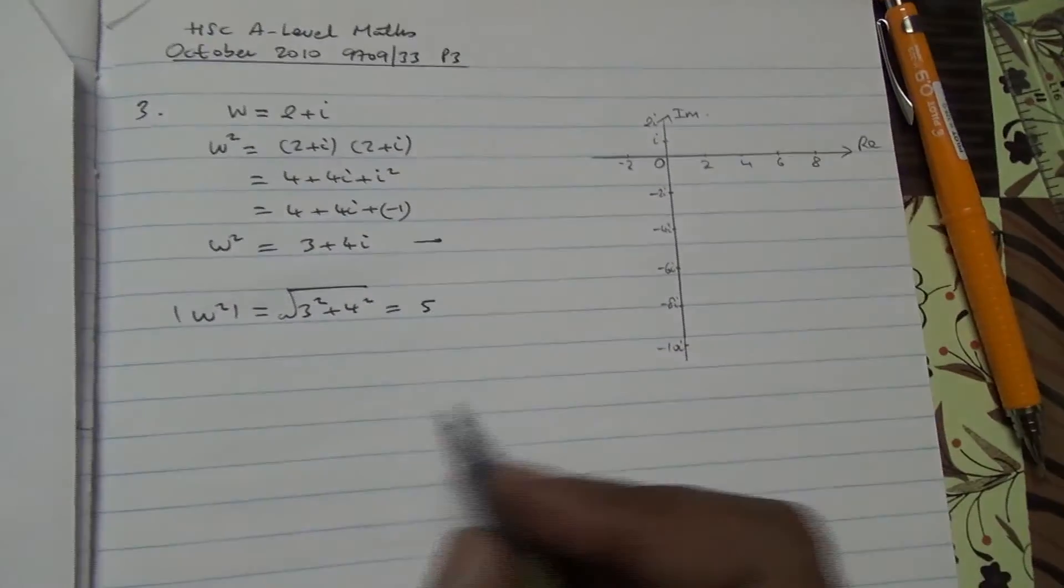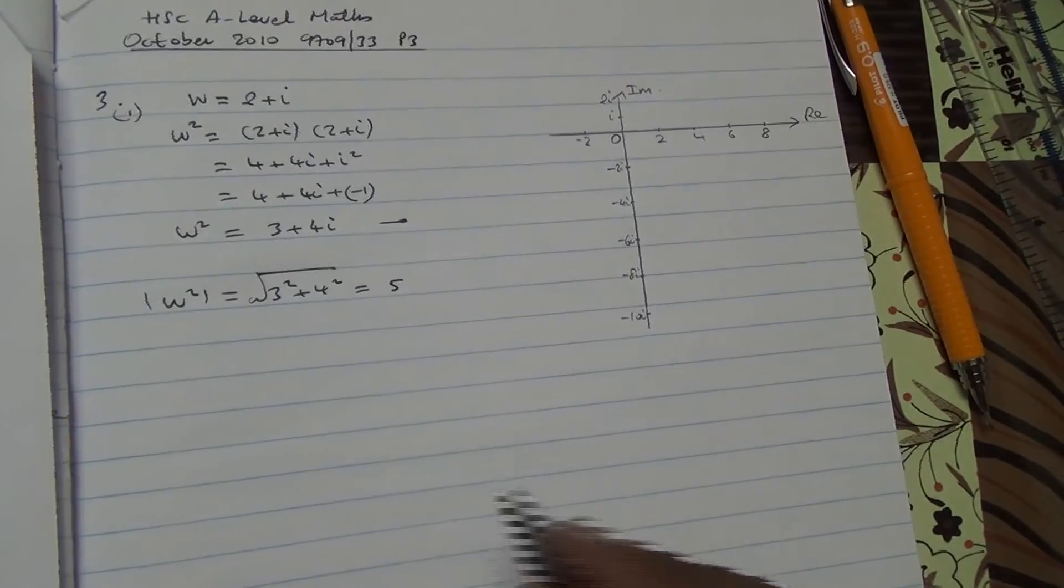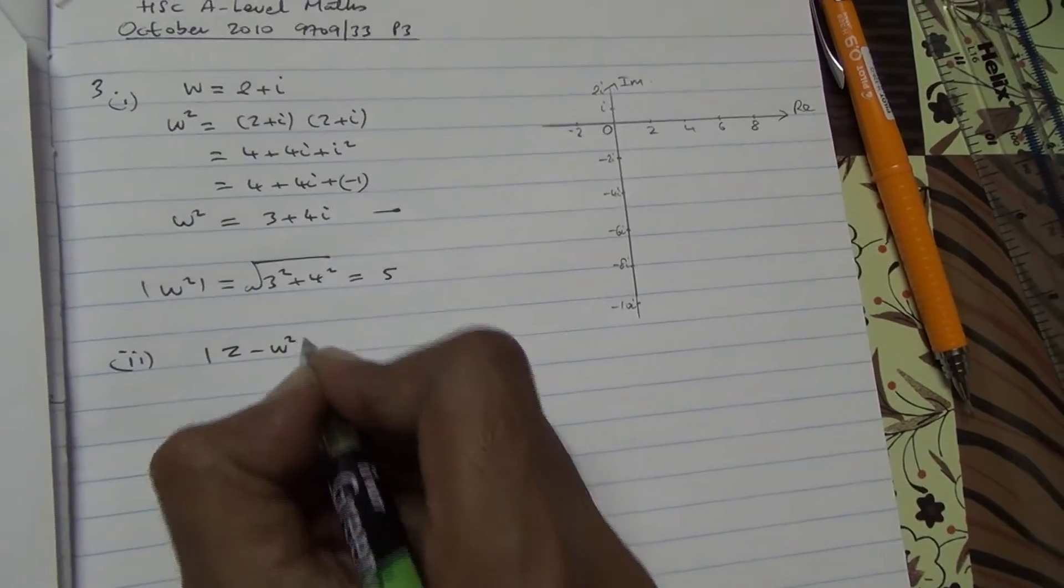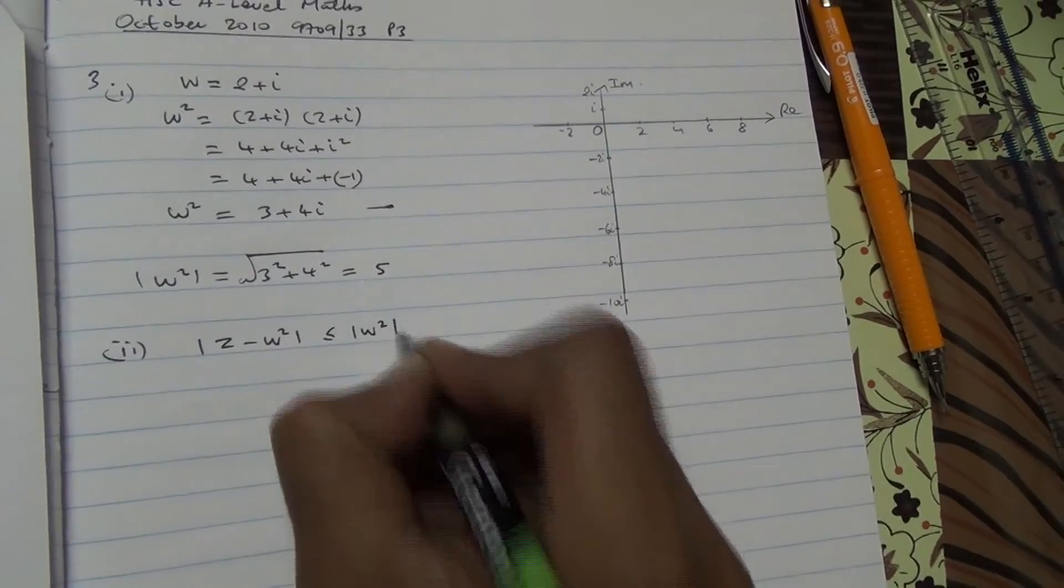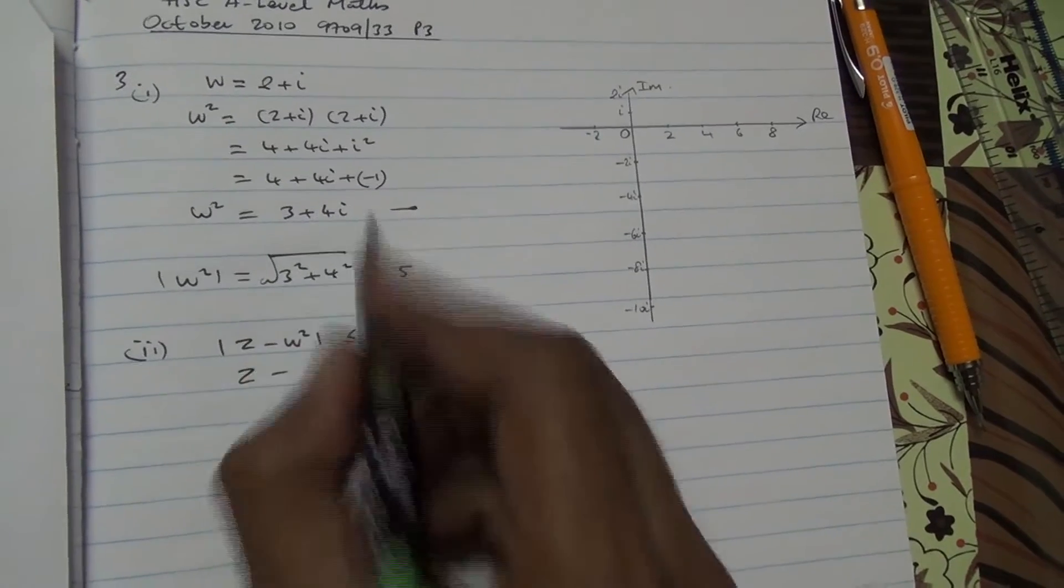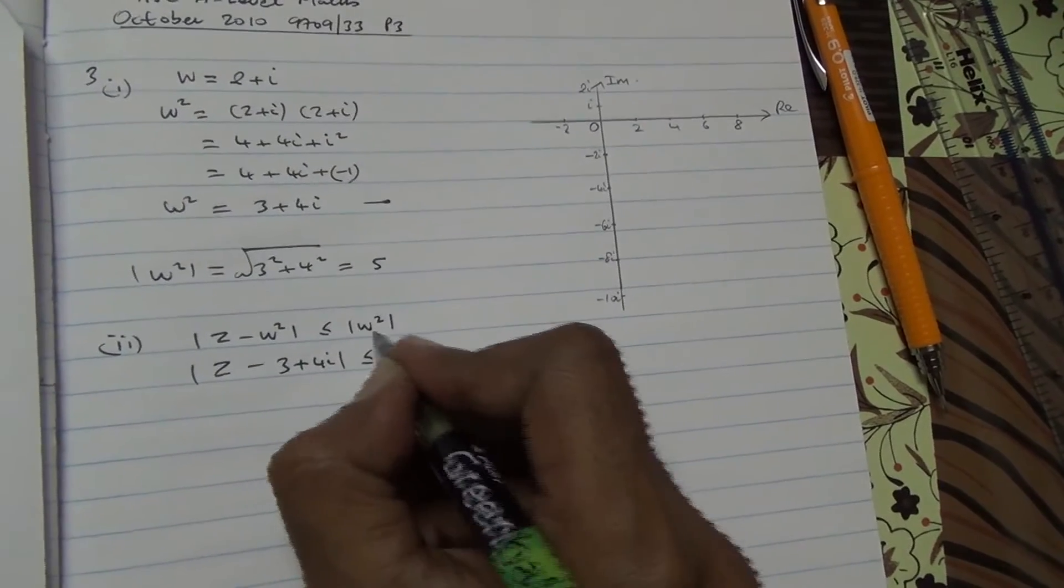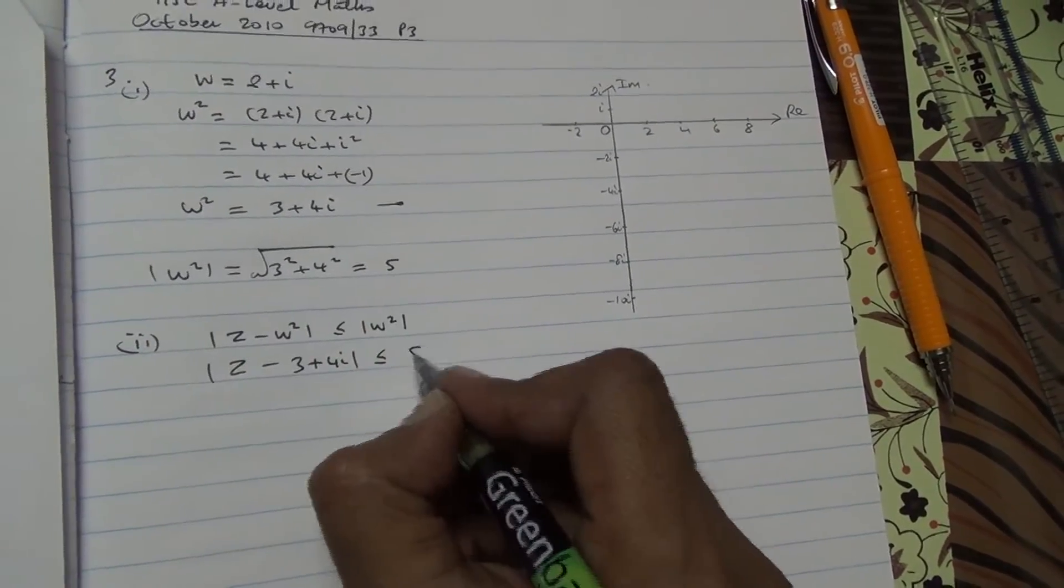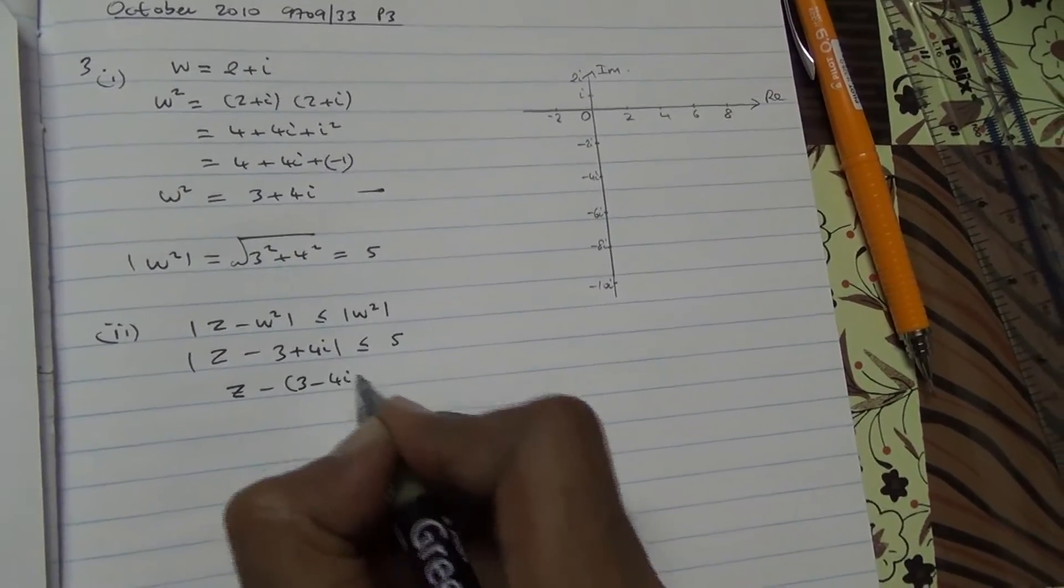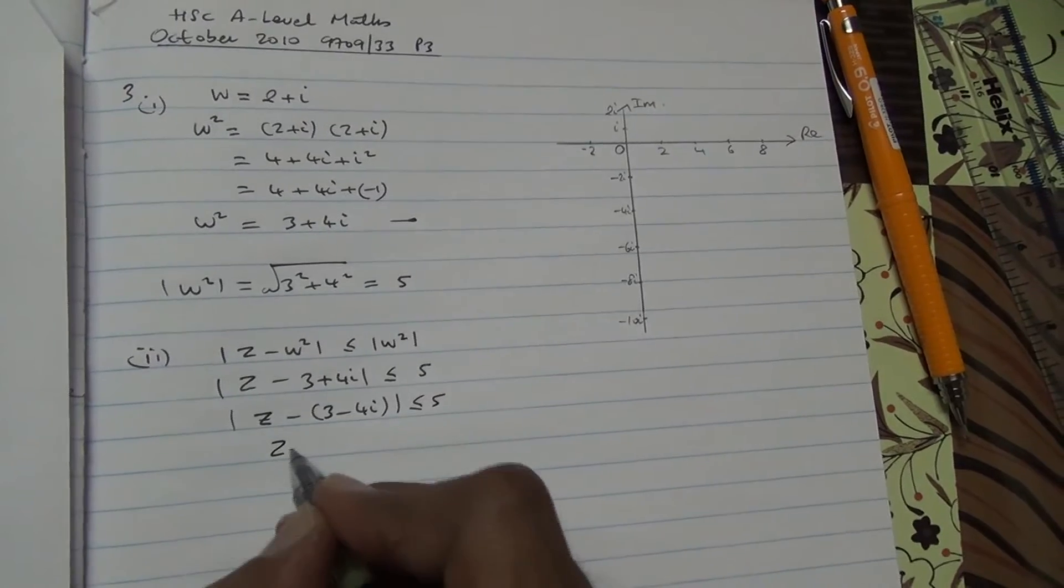Now we need to shade on an Argand diagram the complex numbers. So we have z which satisfy the following: the mod of z minus w square less or equal to mod of w square. So z minus w square minus 3 plus 4i, and less or equal to mod of w square is 5. So we have z minus in brackets 3 minus 4i, and this is less or equal to 5.